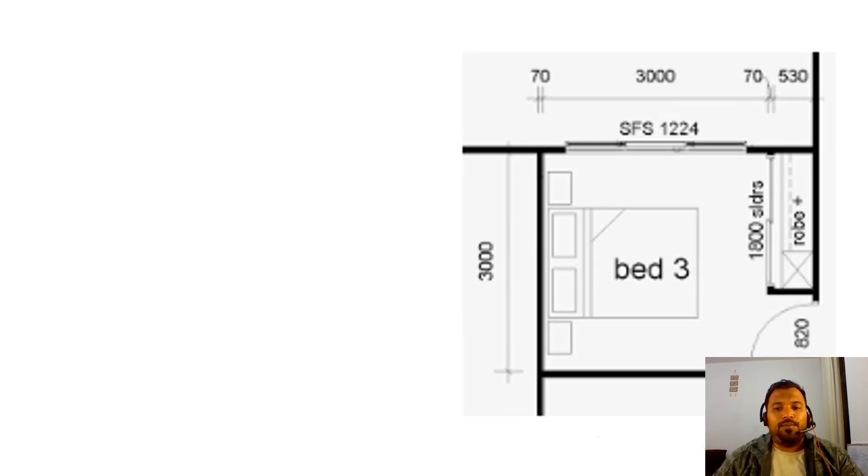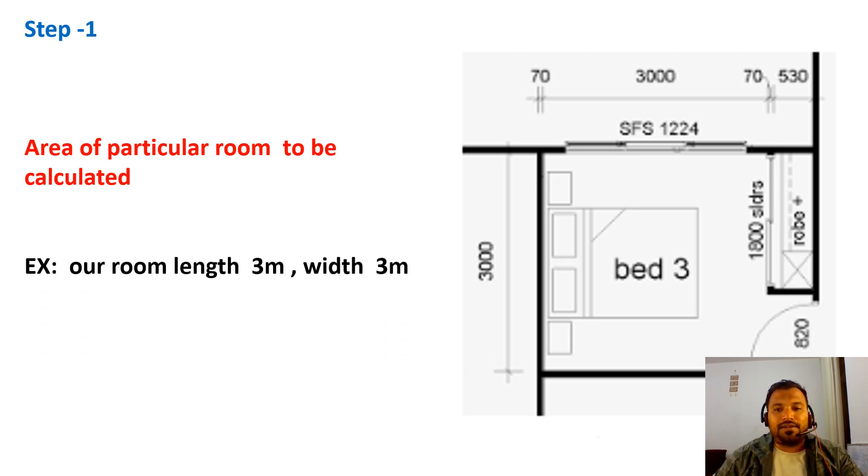I'll consider a bedroom with dimensions of 3 meter by 3 meter. First step is to calculate the area, which is very simple. The length is 3 meters and width is 3 meters. Using the area formula length into width, we substitute these values: 3 into 3 equals 9 meter square. So we get the area for this particular bedroom. Step 1 is finished.